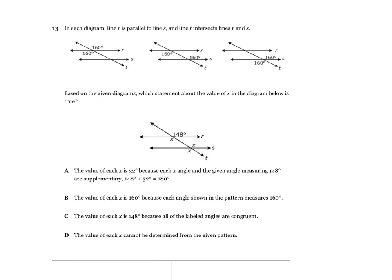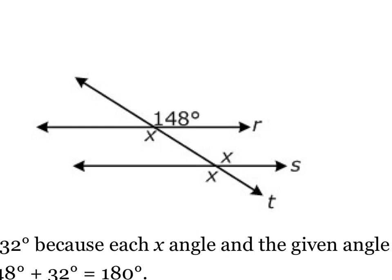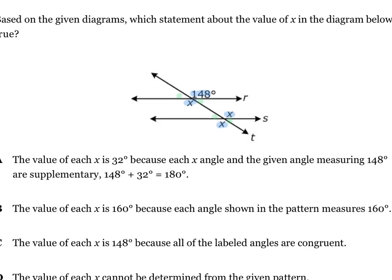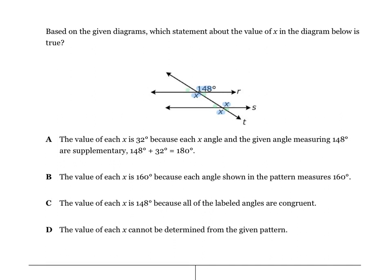Number 13: lines R and S are parallel, and line T is a transversal. Using the same angle relationships we've been using, the corresponding angles are equal, so we know what x has to be. Choice A says x is 32 — decide if that makes sense. Choice B says x is 160. Choice C says x is 148 — that sounds pretty good. Choice D says x cannot be determined, but we can absolutely determine it, so cross that one out. Figure it out from there.